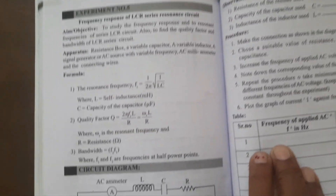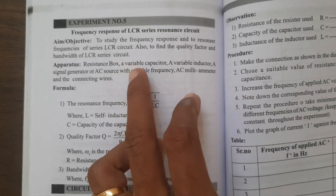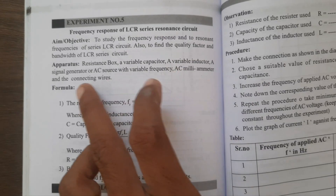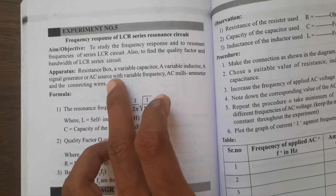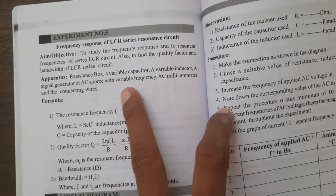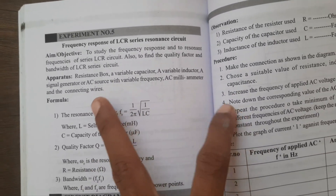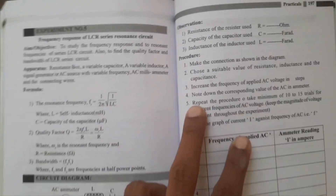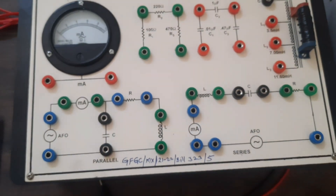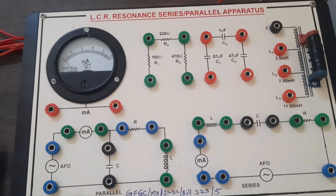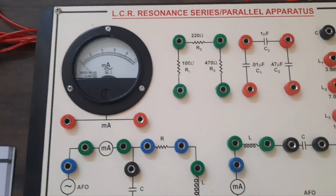Apparatus required: resistance box, variable capacitor, variable inductor, a signal generator or AC source with variable frequency, AC millimeter, and connecting wires. In this apparatus we have resistance, capacitance, inductance, ammeter, and connecting wires.